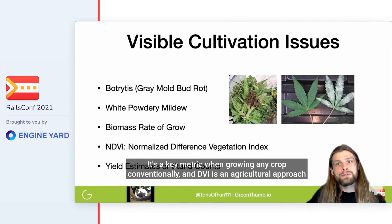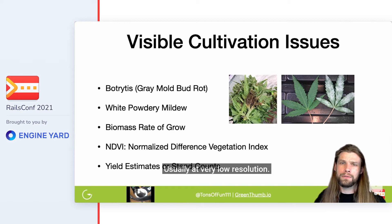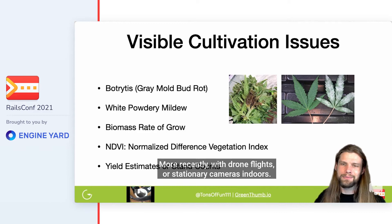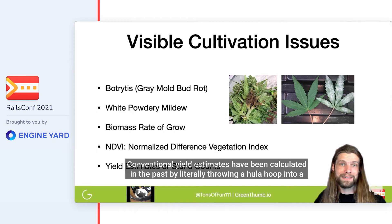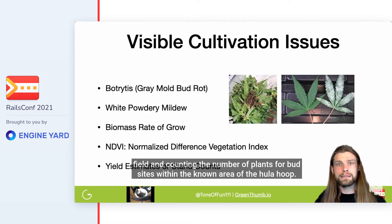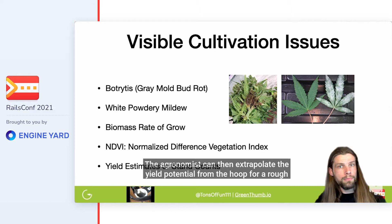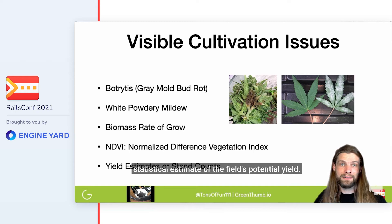We also have the challenge of tracking biomass rate of growth — it's a key metric when growing any crop. Conventionally, NDVI is an agricultural approach to computer vision used to calculate plant health, usually at very low resolution — more recently with drone flights or stationary cameras indoors. Conventional yield estimates have been calculated by literally throwing a hula hoop into a field and counting the number of plants or bud sites within the known area of the hula hoop, then extrapolating the yield potential for a rough statistical estimate.